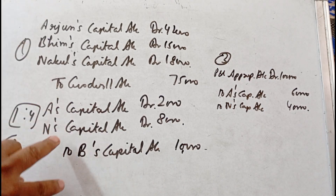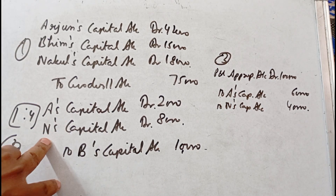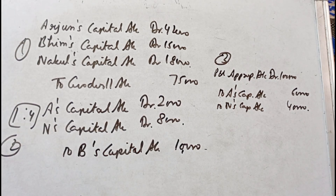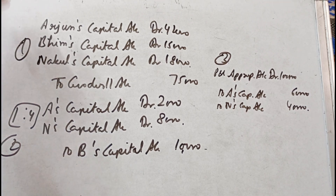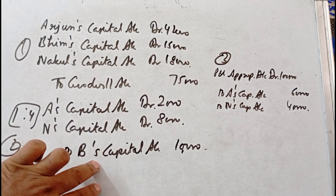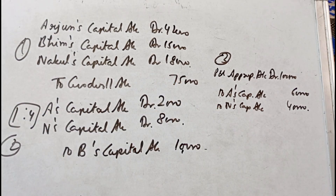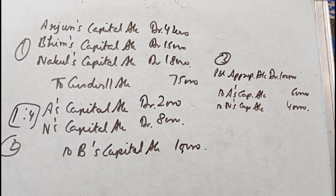So we make three entries: goodwill write-off done in old ratio, adjustment entry for valued goodwill done in gaining ratio, and distribution of profit of the first year of new partnership done in new ratio. This is illustration number 16 of chapter Retirement of a Partner, from the book T.S. Grewal, edition 2024.